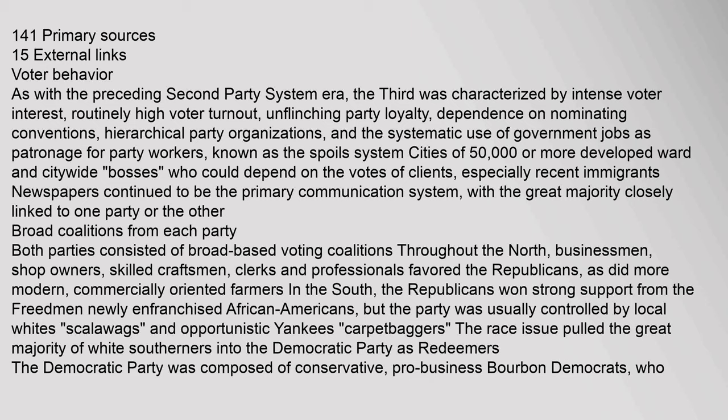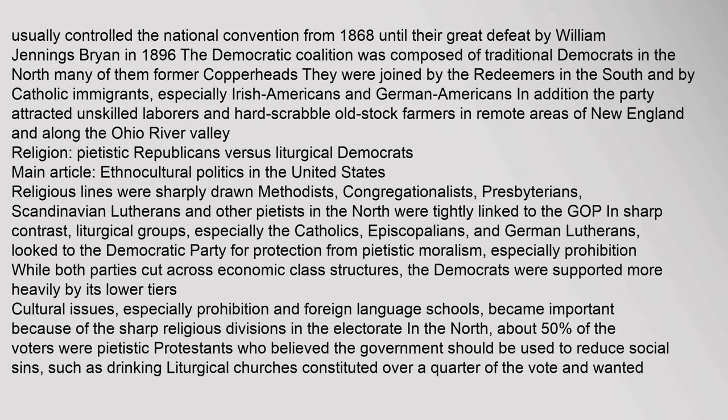The race issue pulled the great majority of white southerners into the Democratic Party as redeemers. The Democratic Party was composed of conservative, pro-business Bourbon Democrats, who usually controlled the national convention from 1868 until their great defeat by William Jennings Bryan in 1896. The Democratic coalition was composed of traditional Democrats in the north, many of them former copperheads, joined by the redeemers in the south and by Catholic immigrants, especially Irish Americans and German Americans, as well as unskilled laborers and hard-scrabble old stock farmers.